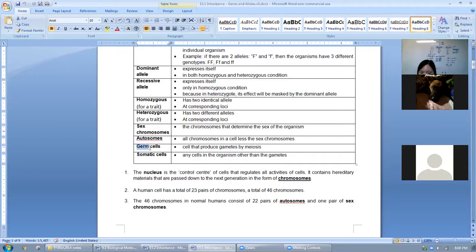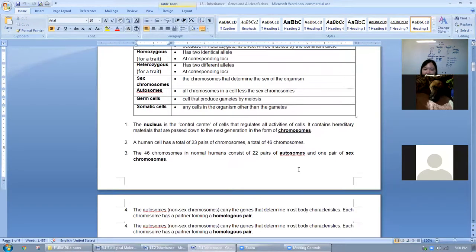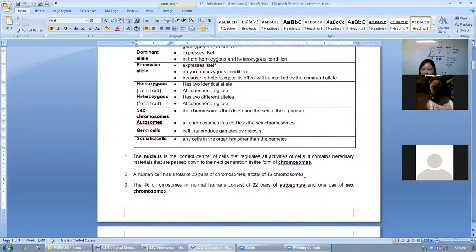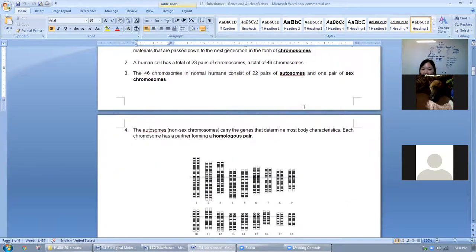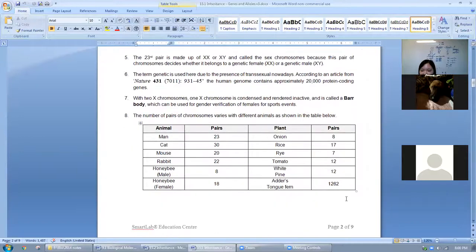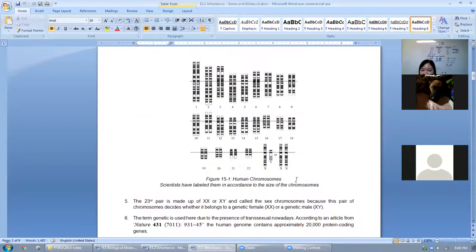And then we have germ cells and somatic cells. Germ cells are the cells in your body that are used for reproduction. In males, they are sperm. In females, they are ovum. Any other cells that are not sperm and not ovum are called somatic cells. So you are either this or this - you cannot be both. So I wanted to read the rest, but they are actually elaboration of what I've just mentioned. Is that okay?